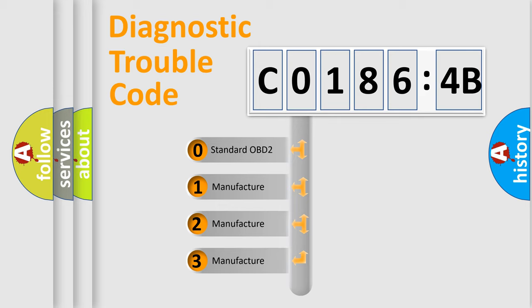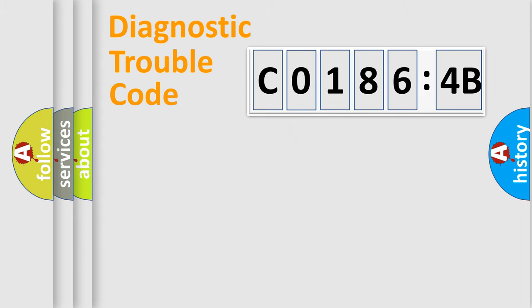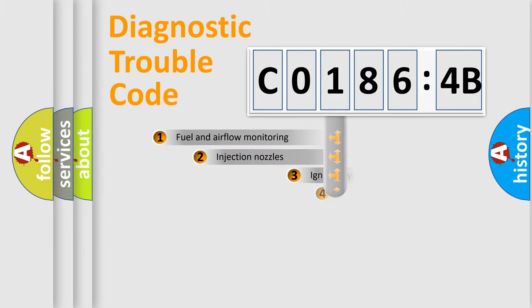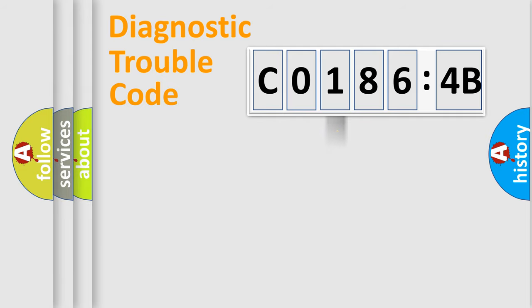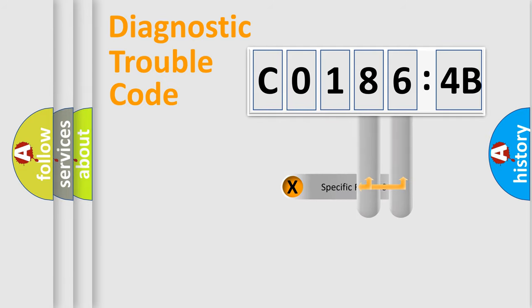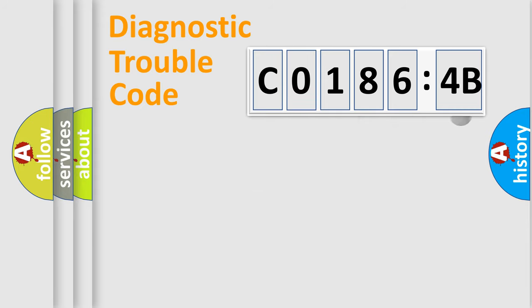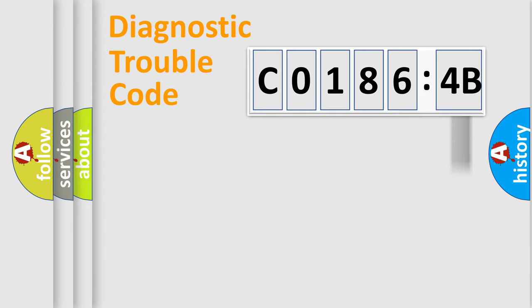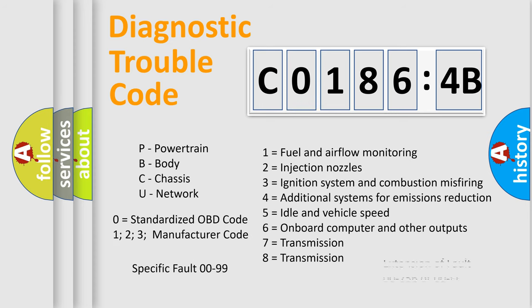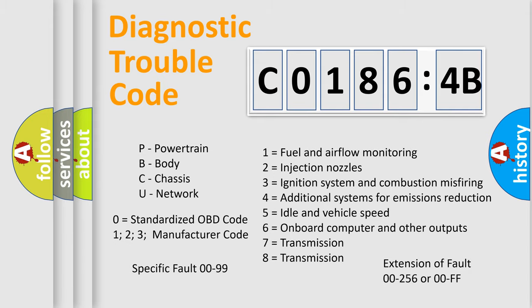If the second character is expressed as 0, it is a standardized error. In the case of numbers 1, 2, or 3, it is a more specific expression of a car-specific error. The third character specifies a subset of errors. This distribution is valid only for the standardized DTC code. Only the last two characters define the specific fault of the group. The add-on to the error code serves to specify the status in more detail — for example, a short to the ground. Such a division is valid only if the second character code is expressed by the number 0.